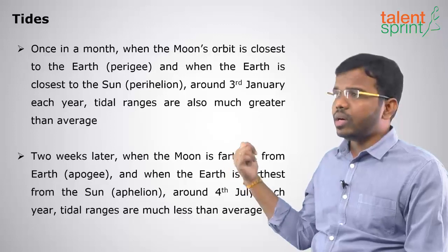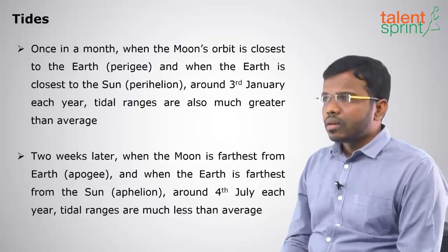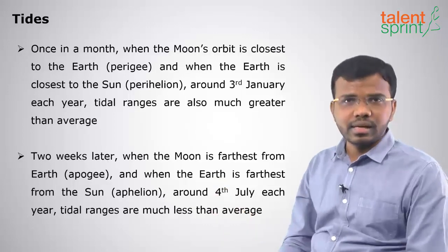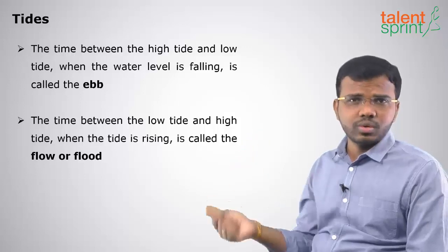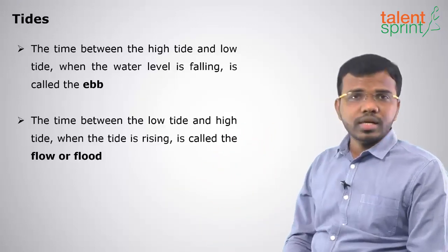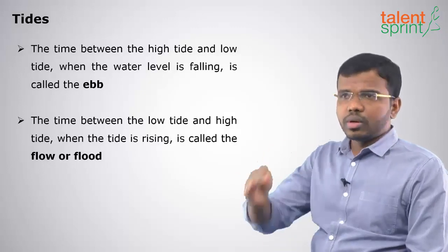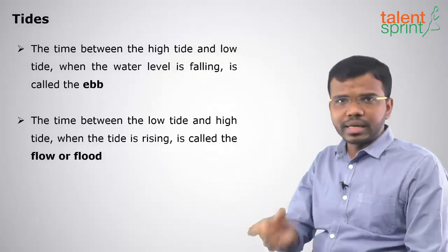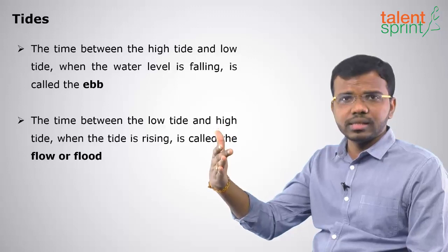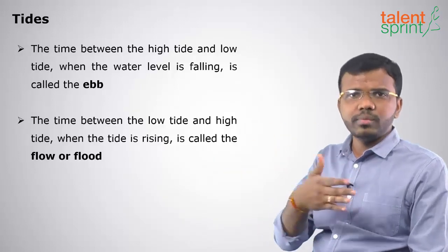When the earth is very nearby to the sun or when the moon is very nearby to the earth, we have higher tidal ranges. When the earth is far away from the sun or when the moon is far away from the earth, we have lesser tidal ranges. Two terminologies related to tides are ebb and flow or flood. The time between the high tide and the low tide when the water level is falling is called ebb. From low tide to high tide, when the water level increases, that is called flow or flood.